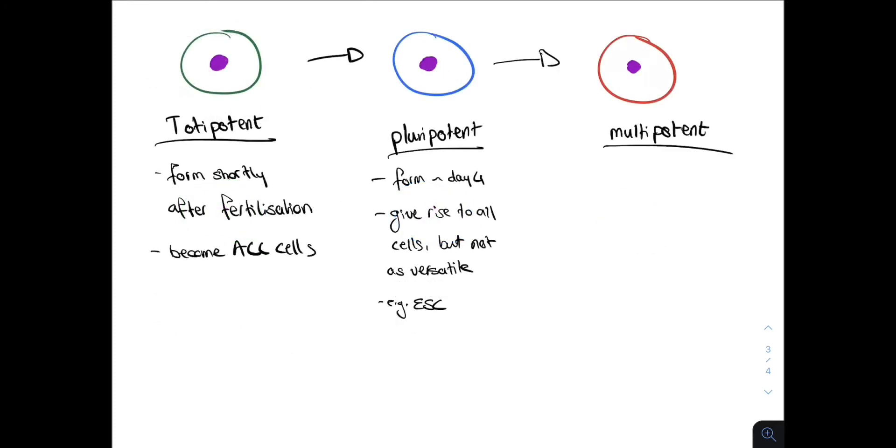And finally, we have the multipotent stem cell, which forms later. These give rise to different cell lineages. Examples of these stem cells include hematopoietic stem cells, mesenchymal stem cells and neural stem cells. The main properties of stem cells include self-renewal, so production of more stem cells, and proliferation and differentiation.